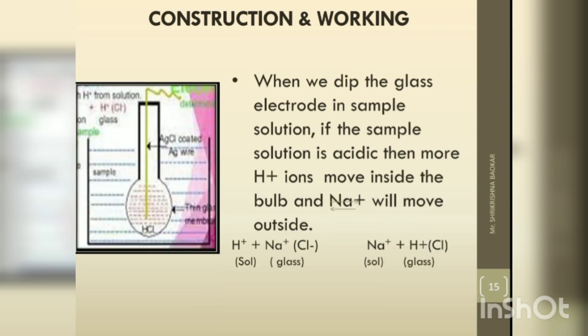When we dip the glass electrode in the sample solution, if the sample solution is acidic, then more H+ ions move inside the bulb and Na+ ions move outside. This ion exchange through the glass membrane governs the potential developed.